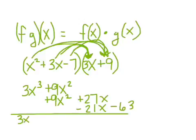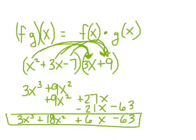Give me 3x to the third plus 18x squared plus 6x minus 63. And again, my domain is still the same thing. It's the intersection between the first one and the second one, which would actually be, again, all real numbers.